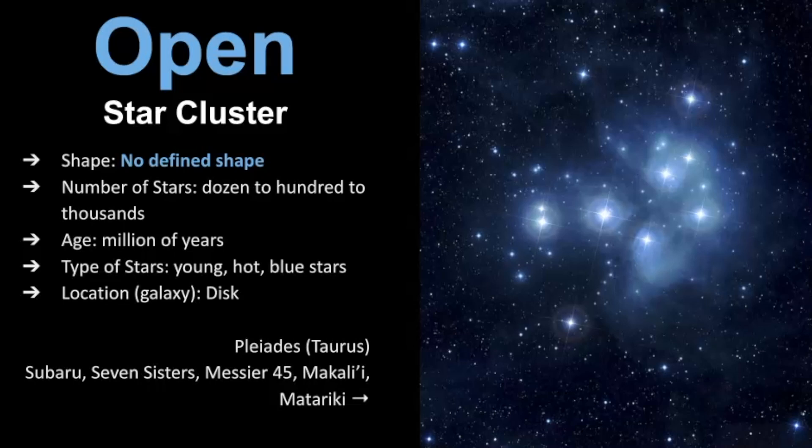First, we'll examine the characteristics of open star clusters. An open star cluster has no defined shape, and in terms of number of stars, it can be a dozen of stars to up to a hundred or even thousands of stars. In this particular photo, we're looking at the Pleiades, which can be seen with the naked eye. We see usually six or seven main stars here, but in reality there's almost a thousand stars here. Its age for open star clusters typically tends to be in the millions of years. These stars that we see in open star clusters are typically young, hot, and blue stars. Their location in the galaxy is typically found in the disc, or the arms of the Milky Way galaxy.